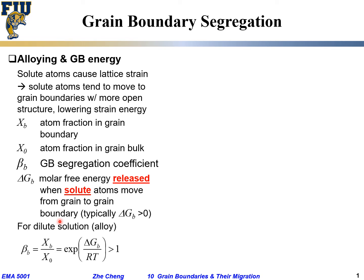For a dilute alloy, people find this relationship: beta_b — the segregation coefficient, defined as x_b over x_0, the ratio of atom fraction in the grain boundary divided by the atom fraction in the bulk — equals exponential of delta_G_b over RT. We said typically delta_G_b is a positive number; exponential of a positive number means this ratio is greater than one.